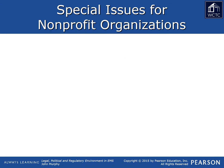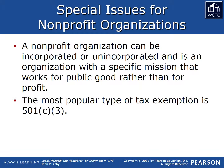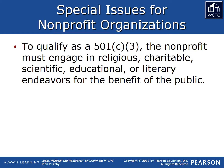How an EMS agency is formed can also impact potential revenue streams. Nonprofit corporations enjoy tax-exempt status because they work toward the public good and are not in business to generate profits for individuals associated with the organization. A very popular type of nonprofit corporation is the 501(c)(3), named after the applicable IRS code, in which the corporation is not only tax-exempt but is also considered a charitable organization. This helps generate revenue through private donations, which are then tax-deductible for the person making the donation. To qualify as a 501(c)(3) corporation, the nonprofit entity must engage in religious, charitable, scientific, educational, or literary endeavors for the benefit of the public.